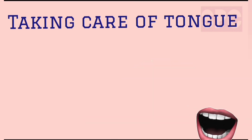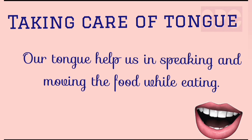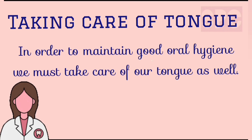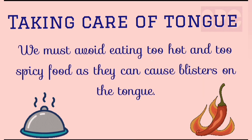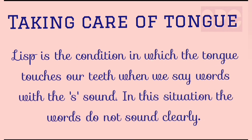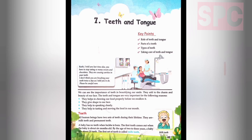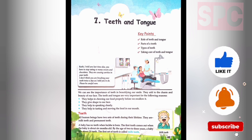Our tongue helps us in speaking and in moving food particles in our mouth while eating. To maintain good oral hygiene, we must clean our tongue gently with a tongue cleaner every morning to avoid bad breath. We must avoid eating too hot and too spicy food as they can cause blisters on the tongue. Lisp is the condition in which the tongue touches our teeth when we say words with an 's' sound, causing unclear speech.